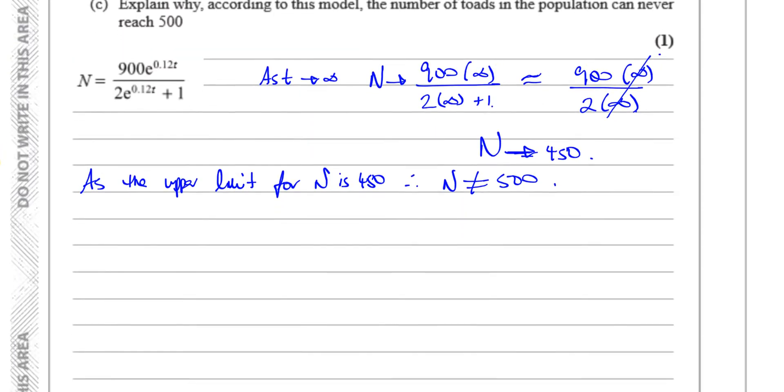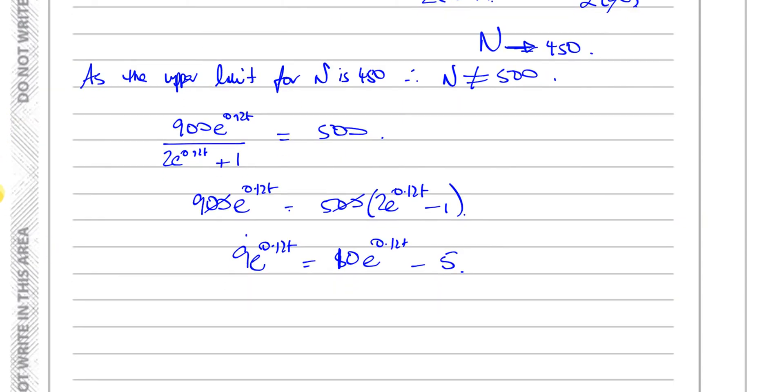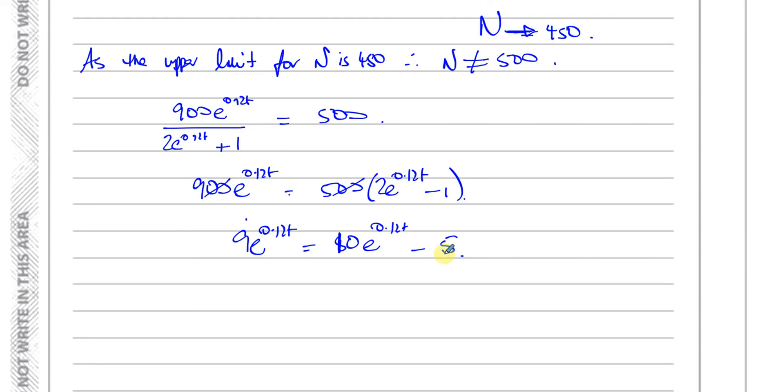Alternatively, another method you could use is you could try to solve the equation when we put 900 e to the power of 0.12t over 2 e to the power of 0.12t plus 1 equals 500. If you try to solve this equation, you end up with 900 e to the power of 0.12t equals 500 times 2 e to the power of 0.12t plus 1. We can simplify this, divide both sides by 100, and we're left with 9 e to the power of 0.12t equals 10 e to the power of 0.12t plus 5.